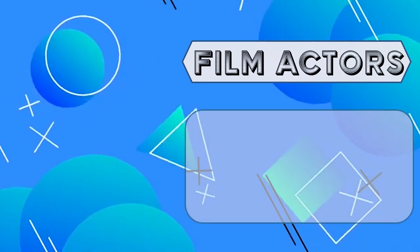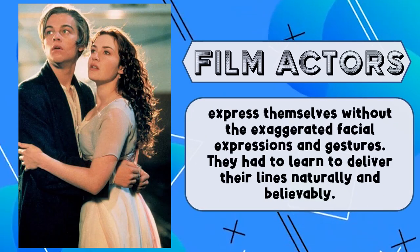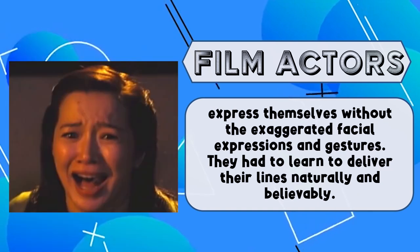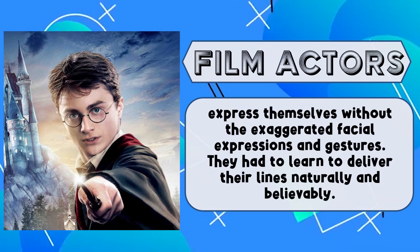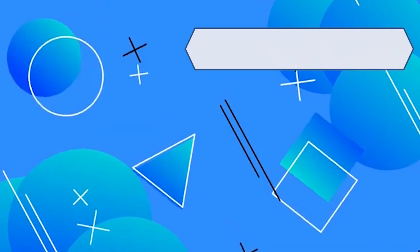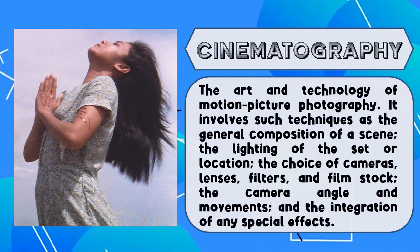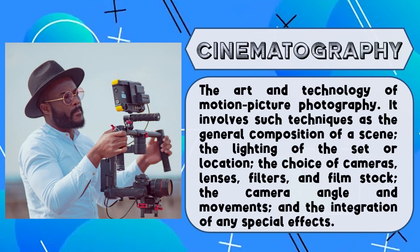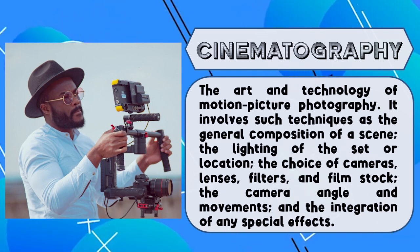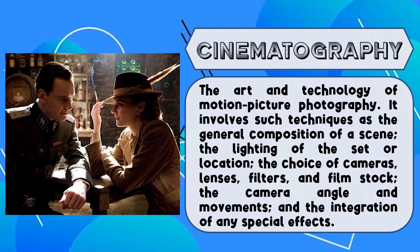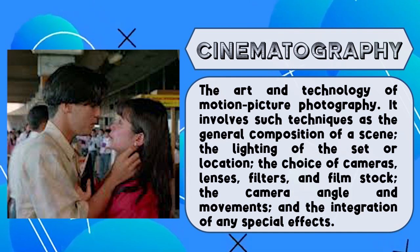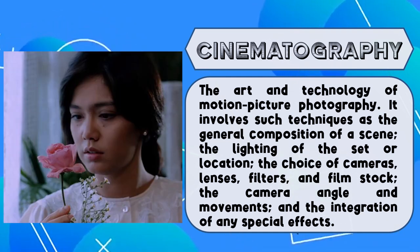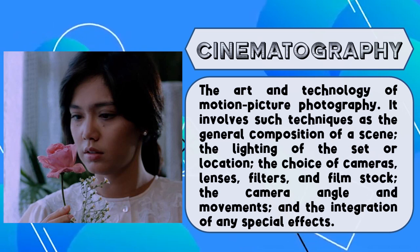Film actors express themselves without exaggerated facial expressions and gestures. They had to learn to deliver their lines naturally and believably. Cinematography is the art and technology of motion picture photography. It involves such techniques as the general composition of a scene, the lighting of the set or location, the choice of cameras, lenses, filters, and film stock, the camera angle and movements, and the integration of any special effects.